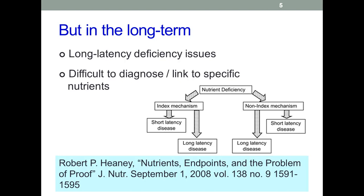Heaney also noted that in most people, homeostatic mechanisms act to keep most metabolites — those that are indicators of nutrient status — within relatively narrow ranges of concentrations. I plan to come back to this in a later video. For now, Heaney makes a clear distinction between index diseases such as scurvy and longer-term or non-index diseases. This distinction is considered key to understanding the more subtle effects of below-optimal inputs of nutrients.